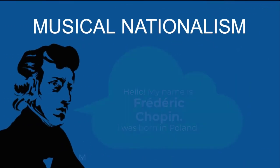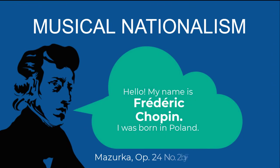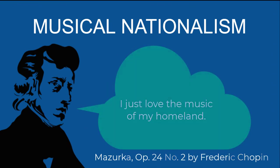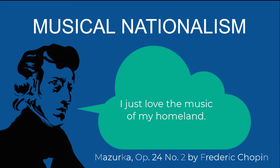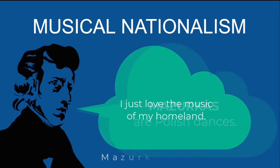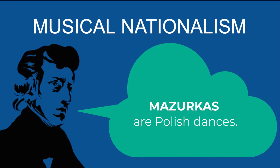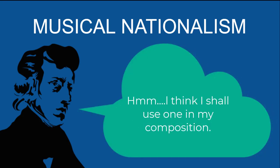Musical nationalism accompanied the romantic movement. In other words, in order to show a love or patriotism for their country, composers would include familiar themes in their music. For example, Chopin included folk songs in his piano works called Mazurkas, and Sibelius wrote a symphony called Finlandia for his homeland.